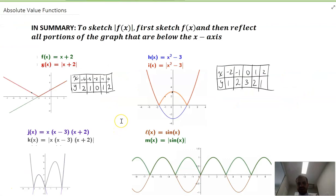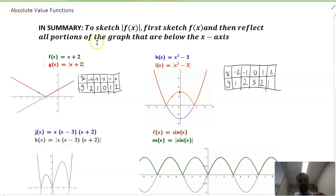All right. That's all I need to say about absolute value functions in this video. In summary, if you want to sketch the absolute value of f of x, first just sketch f of x, however you know how to sketch it, and then reflect all portions of the graph that are below the x-axis to above the x-axis.